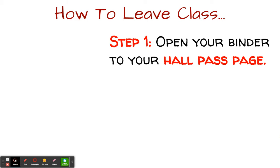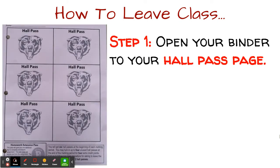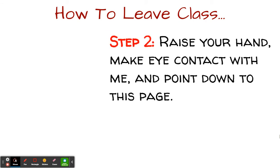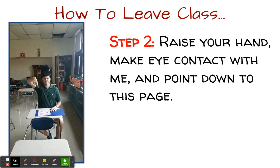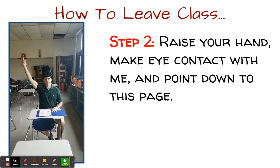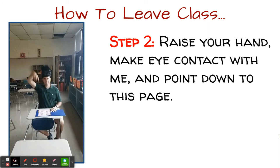What you're going to do is open up your world history binder to your hall pass page, and you're going to perform this silent cue. You're going to raise your hand, make eye contact with me, and then point down to your hall pass page just like you see in this GIF. Open up your binder to that bright pink hall pass page, point up, and then point down at your hall pass quietly.